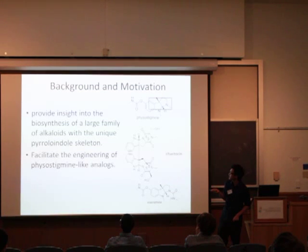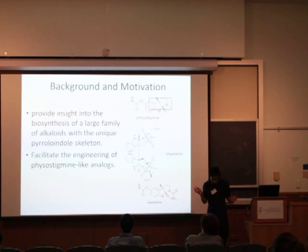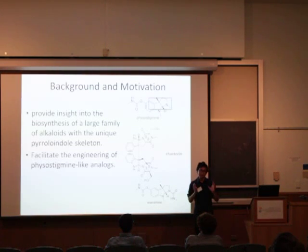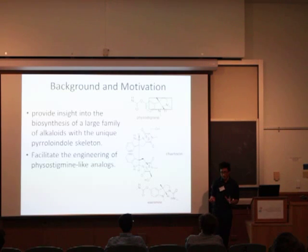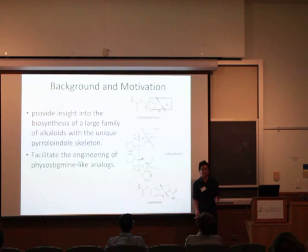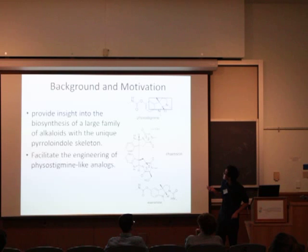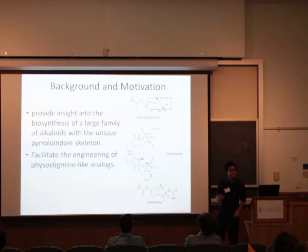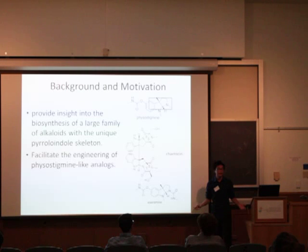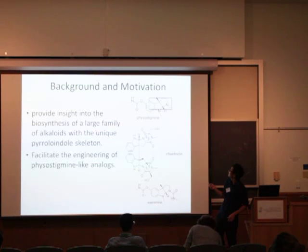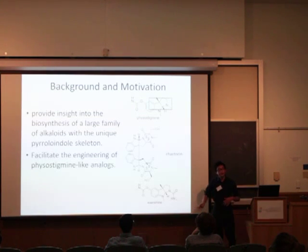We can also facilitate engineering of physostigmine-like analogs. Pharmaceutical companies typically start off with a compound and then use organic synthesis techniques, modifying methyl groups to hydroxy groups or deleting methyl groups, and then make a library of compounds to screen. If we can understand the pathway to making physostigmine, maybe we can have the bacteria do it instead of organic chemists, adding enzymes that can tailor modifications on the nitrogen. The precursors to this molecule may also have additional value.